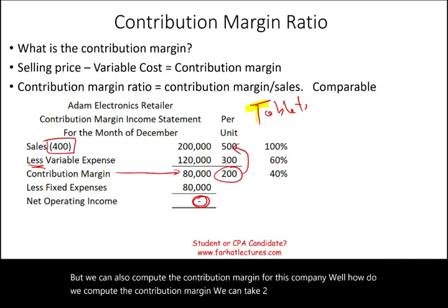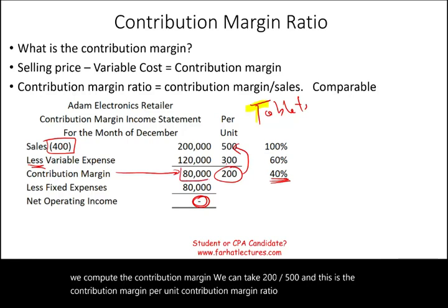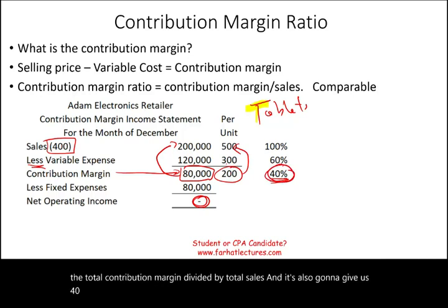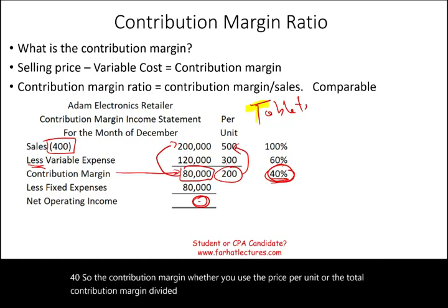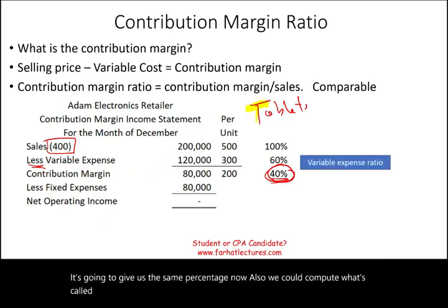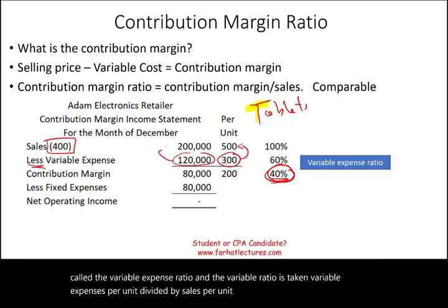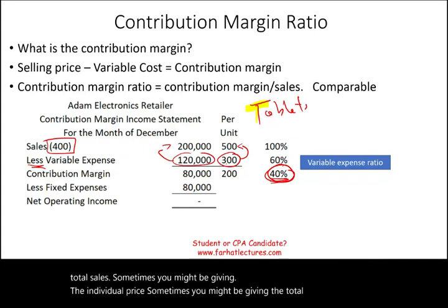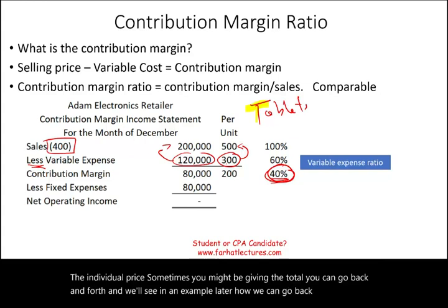We can compute the contribution margin ratio for this company. We can take $200 divided by $500 — this is the contribution margin per unit — to get the contribution margin ratio. Or we can take the total contribution margin divided by total sales, and it's also going to give us 40%. Whether you use the price per unit or the total contribution margin divided by total sales, it gives the same percentage. We could also compute the variable expense ratio, which is variable expenses per unit divided by sales per unit, or total variable expenses divided by total sales.